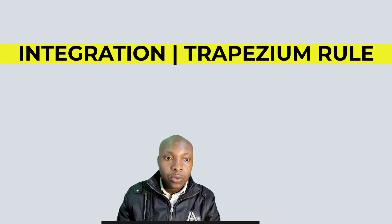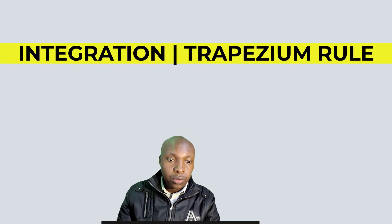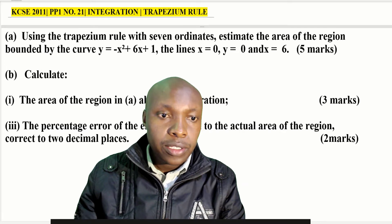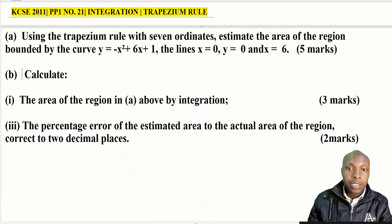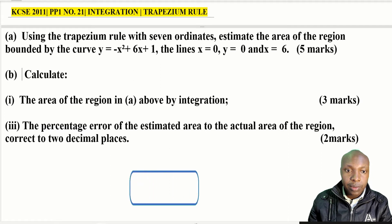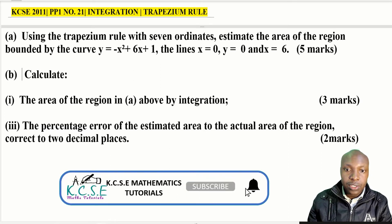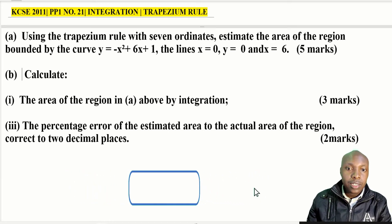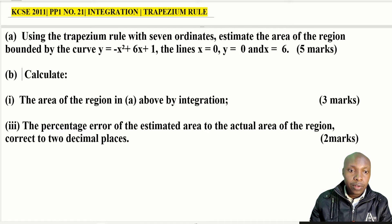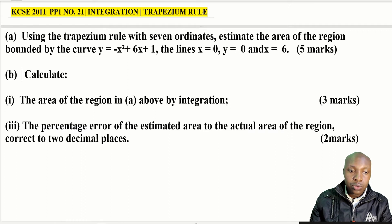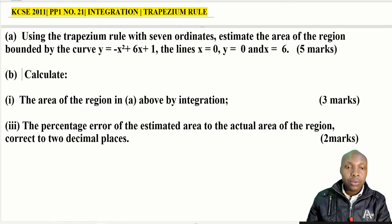Hello and welcome to the lesson — KCCE 2011 Paper 1, Question 21: Integration and use of the Trapezium Rule. The question reads: using the trapezium rule with seven ordinates, estimate the area of the region bounded by the curve y = -x² + 6x + 1, the lines x = 0, y = 0, and x = 6. Part B: calculate the area by integration. Part C: find the percentage error of the estimated area to the actual area, correct to two decimal places.